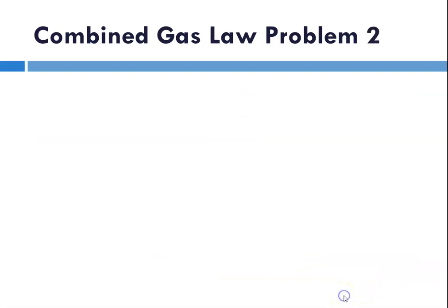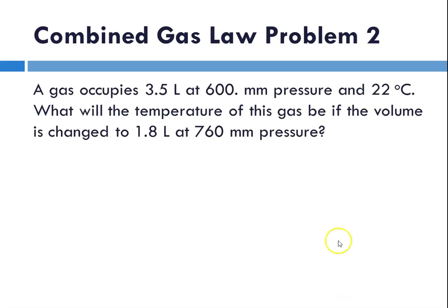Now, let's do another one. Combined gas law problem 2. So here, a gas that occupies 3.5 liters at 600 mm pressure and 22 degrees C. What will the temperature of this gas be if the volume is changed to 1.8 L at 760 mm pressure?